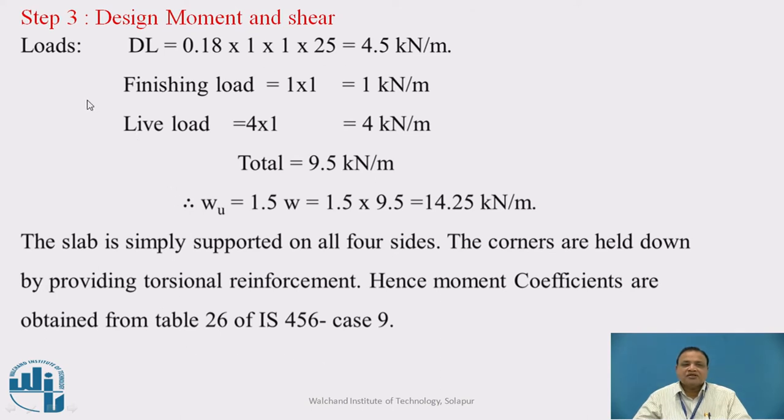Next, Step 3: Design moment and shear. For that, load calculation first. The dead load: 0.18 times 1 times 1 times 25 equals 4.5 kilonewton per meter. Finishing load: 1 kilonewton per meter. Live load: 4 kilonewton per meter. Total load is 9.5 kilonewton per meter. The factored load W is 1.5 times 9.5, equals 14.25 kilonewton per meter.